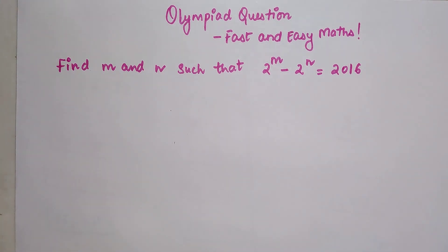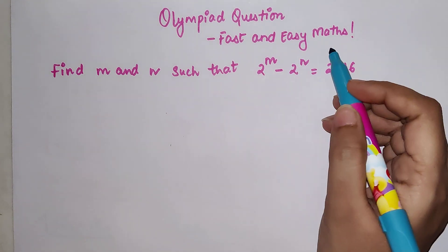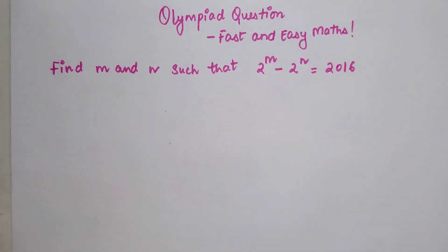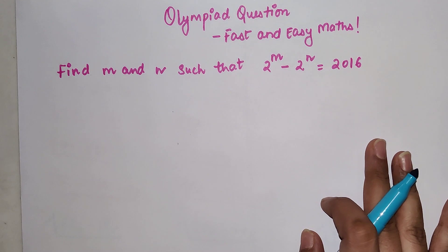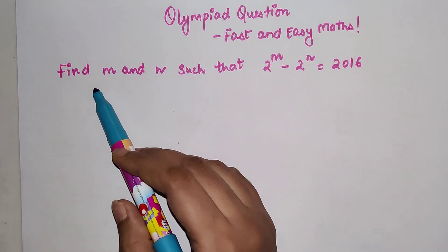Welcome everyone to my channel, Fast and Easy Maths, which is dedicated to give you tips and tricks related to mathematics. Students, today we are going to solve an Olympiad question. The question is: Find m and n such that 2 raise to m minus 2 raise to n equals 2016.